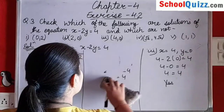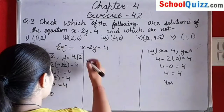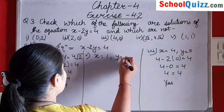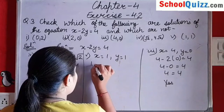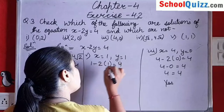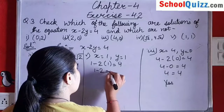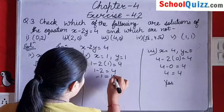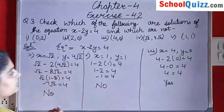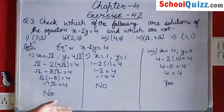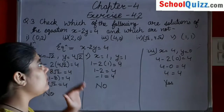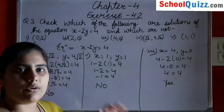Now checking for the last, fifth point. x given is 1 and y is also 1. Putting x equals to 1 and y equals to 1, we get 1 minus 2 equals 4, that means minus 1 equals 4. Its answer is also no — (1, 1) is also not a solution of x minus 2y equals to 4. Like this we check solutions of given equations.